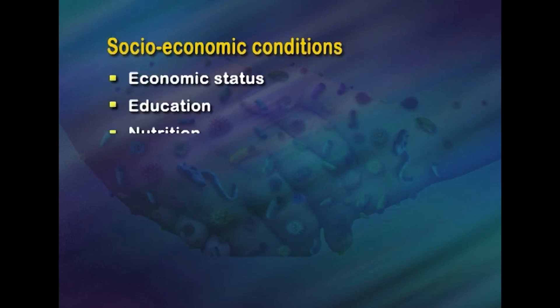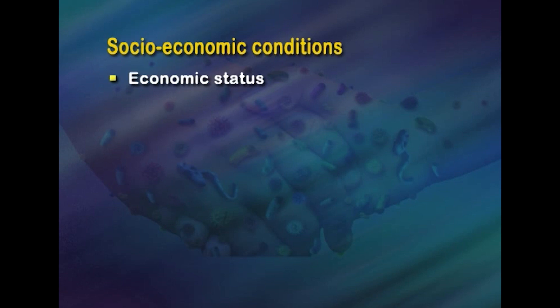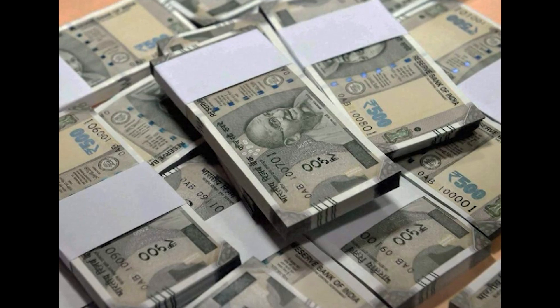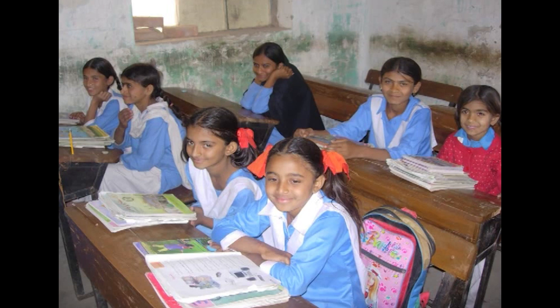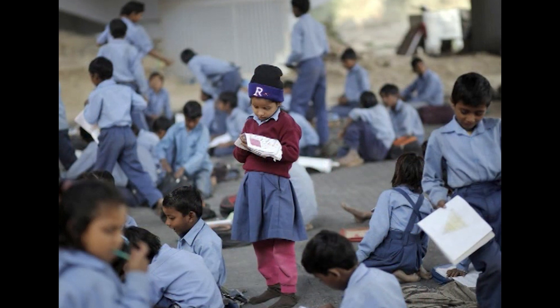Various socio-economic conditions that influence health include economic status, education, nutrition, employment, housing, and the political system. GNP is a widely accepted measure of economic performance; economic status determines purchasing power, standard of living, quality of life, family size, pattern of disease, and deviant behavior in the community. Improvement in economic status can also lead to increased incidence of diseases of affluence like coronary heart disease, diabetes mellitus, and obesity.